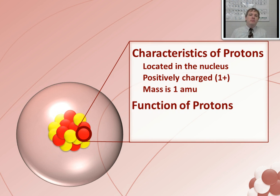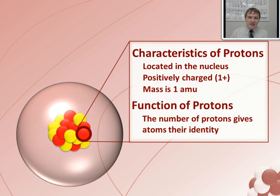The function of protons, what do they do for an atom? Well, protons are the things that give atoms their identity. The number of protons determines what type of atom you're dealing with. For example, if an atom only has one proton, it's hydrogen. If it has three protons in its nucleus, regardless of how many neutrons and electrons it has, if it has three protons, it's lithium. If it has eight protons, like this atom here does, regardless of how many neutrons and electrons, if it has eight protons, it's oxygen.